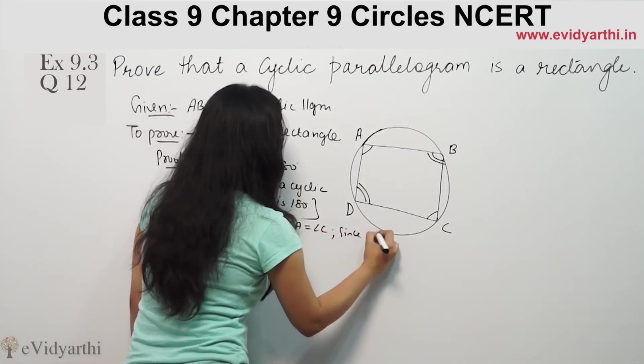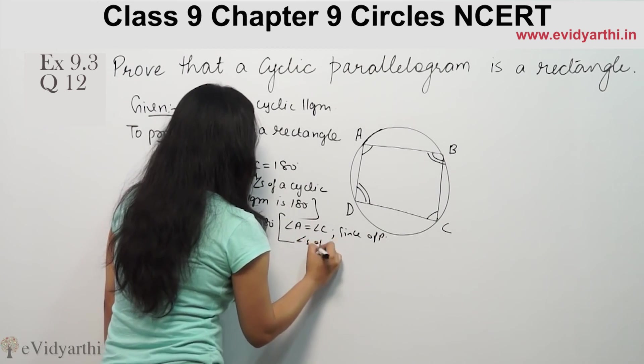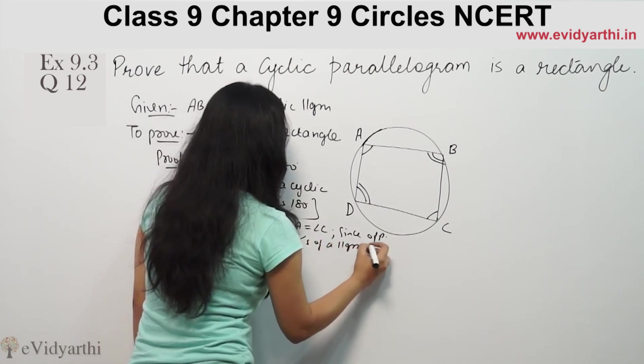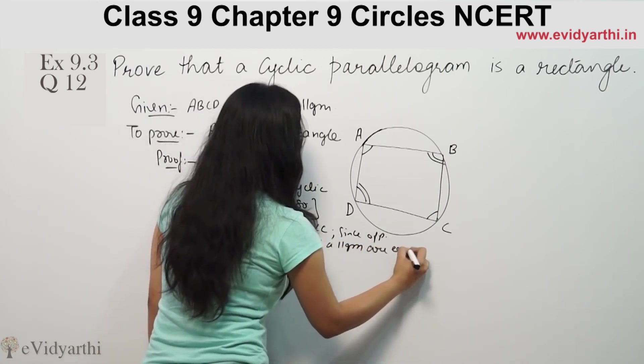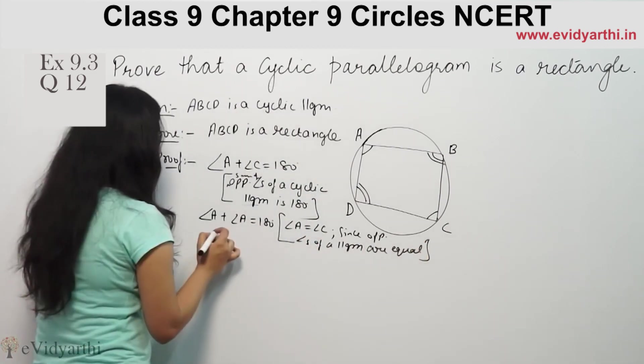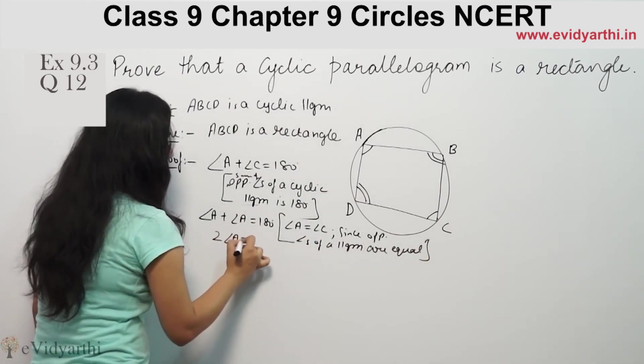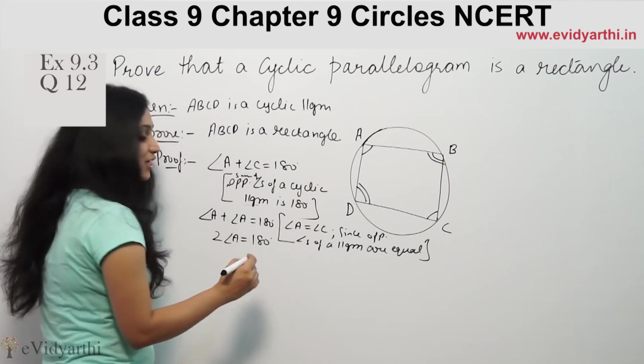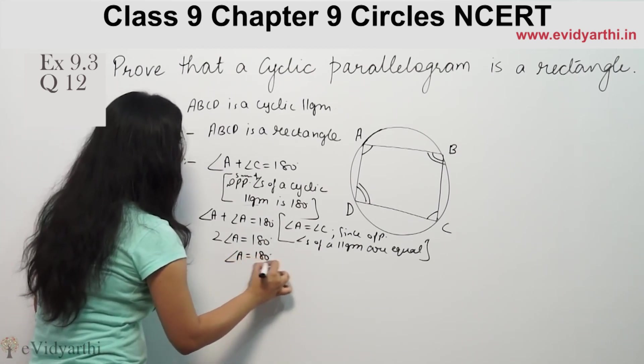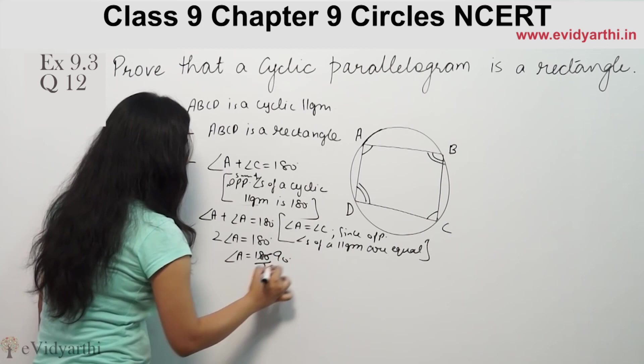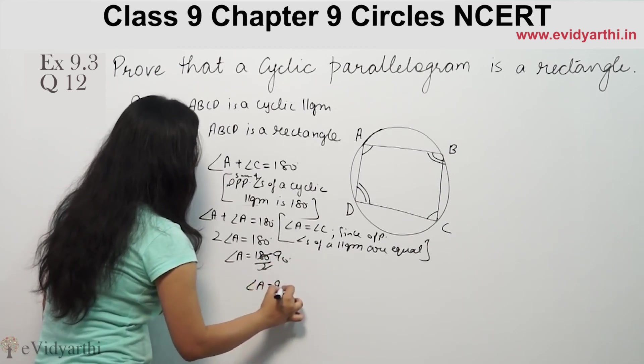Since opposite angles of a parallelogram are equal, so here we can see angle A plus angle A means twice of angle A equals 180 degrees. So here we can see angle A value is 180 degrees by 2, means 90 degrees. Angle A is 90.